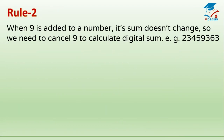Rule 2: When 9 is added to a number, its digital sum does not change. So we need to cancel 9 to calculate the digital sum. For example, take the number 2, 3, 4, 5, 9, 3, 6, 3.